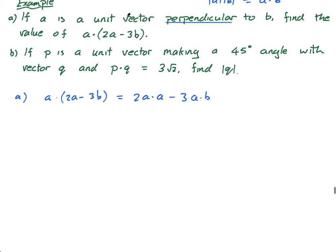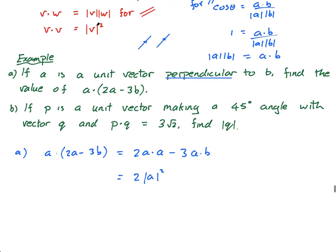It says a is a unit vector perpendicular to b. So if a and b are perpendicular, the dot product equals zero — so that term is zero. And a dot a is going to be the magnitude of a squared. So we have 2 times magnitude of a squared, minus 3 times zero. A unit vector has length 1, so it's just 2 times 1 squared, which is 2. So that wasn't that difficult.